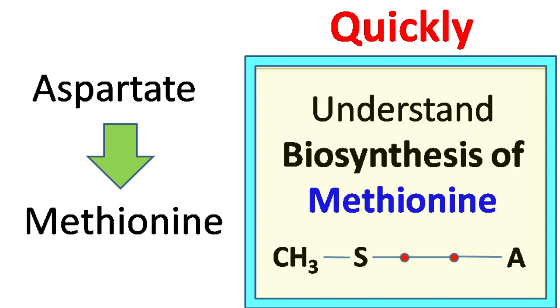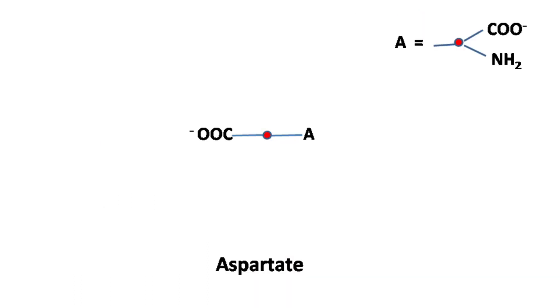Hey everyone, quick biochemistry basics here. Let's talk about biosynthesis of methionine. In the first step, aspartate is phosphorylated by ATP in the presence of enzyme aspartokinase to give aspartyl beta-phosphate.